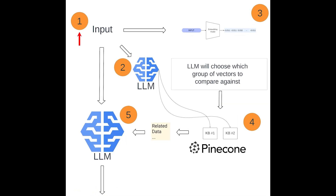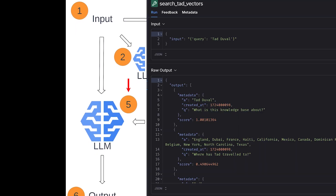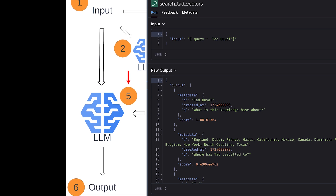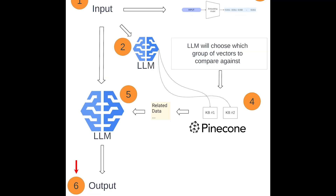Let's walk through what's happening here. One: we send some prompt to our agent. Two: the LLM powering our agent decides if this prompt is related to any supported knowledge bases — if not, the LLM returns directly; if it is, we continue. Three: we convert our input prompt into a vector. Four: we compare that vector against the vectors in any relevant knowledge bases and retrieve the original data represented by the highest matching vectors. Five: we combine all retrieved data with the original prompt and send that to our LLM. And six: we receive the final output from the LLM and return that to whoever is using our agent.